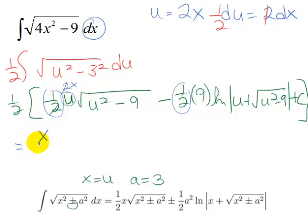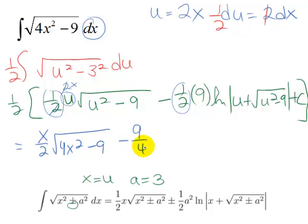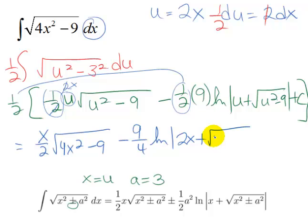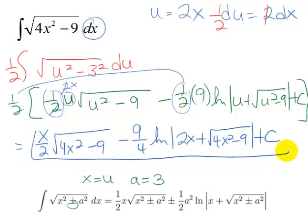This is going to be x/2 times the square root of (u is 2x, so square that) 4x² minus 9, and then minus 9/4, because I still have this 1/2, times the natural log of (u is 2x) 2x plus the square root of 4x² minus 9, plus a constant.